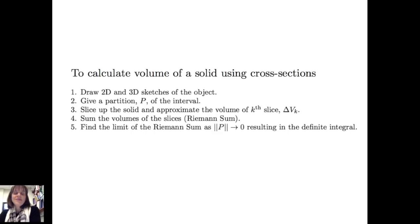Let's summarize the process. To calculate the volume of a solid using cross sections: first, draw two- and three-dimensional sketches of the object. Then give a partition P of the interval — this tells us how to slice the solid — and approximate the volume of the kth slice, delta V sub k. Sum the volumes of the slices to get the Riemann sum. Find the limit of the Riemann sum as the norm of the partition goes to 0, resulting in infinitely many very thin slices, which produces the definite integral. Finally, evaluate the definite integral to find the exact volume of the solid.